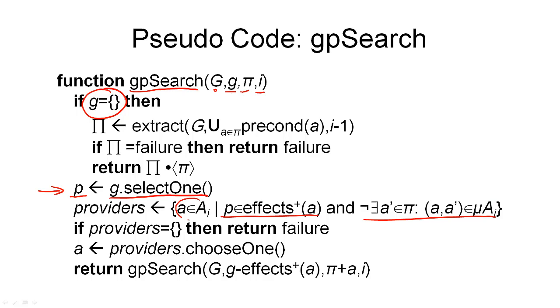So this is the set of all actions in ai that we could use to achieve pi, and we call the set the providers. Now, if the set of providers is empty, then we can return failure. So that means all the actions we found in the action layer ai were mutually exclusive with action we already selected. So we can't choose an additional action that would give us the proposition P. In that case, we return failure.